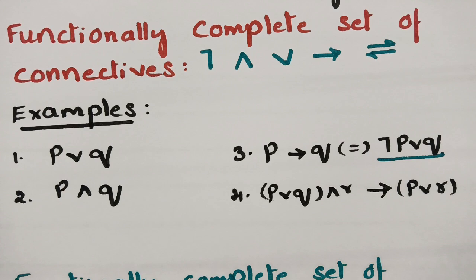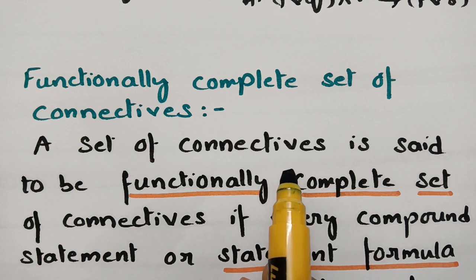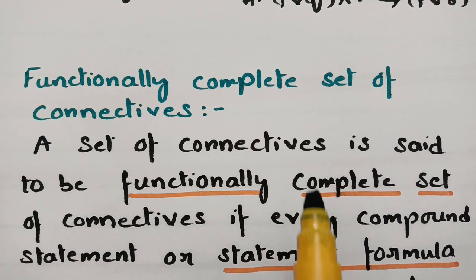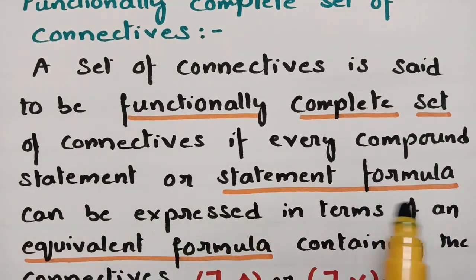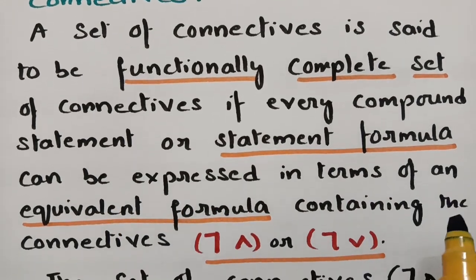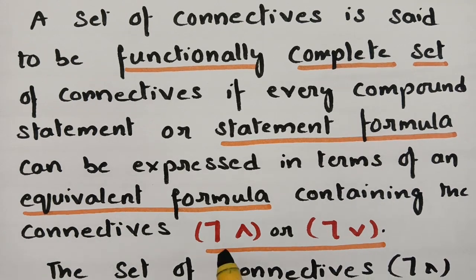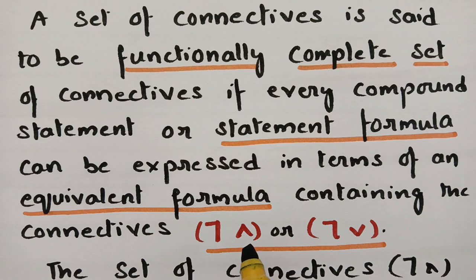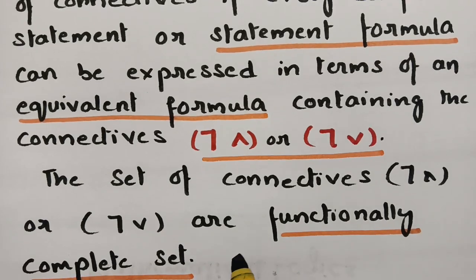Among all connectives — negation, conjunction, disjunction, implication, and biconditional — what are the functionally complete set of connectives? Every compound statement or statement formula which can be expressed in terms of an equivalent formula containing the connectives negation and conjunction, or negation and disjunction — these sets of connectives are called the functionally complete set.